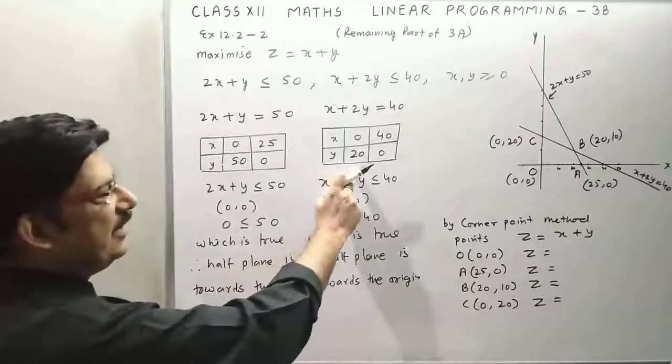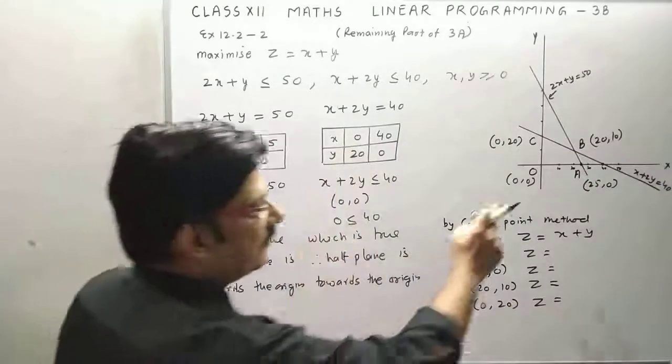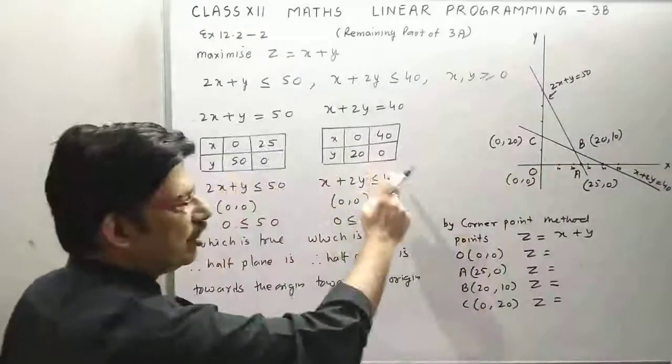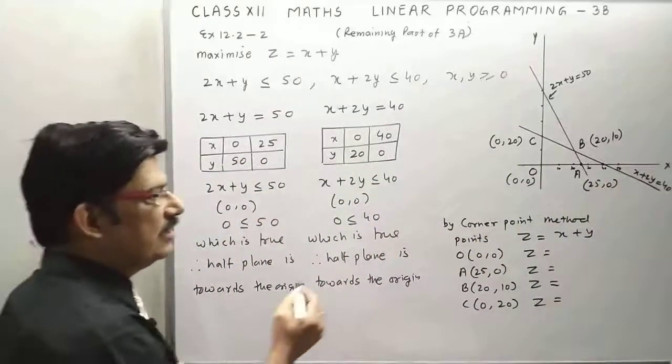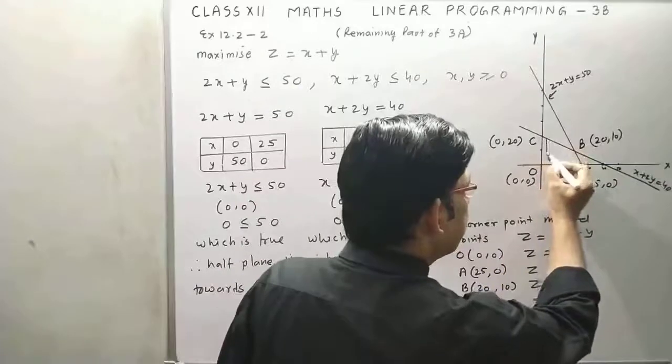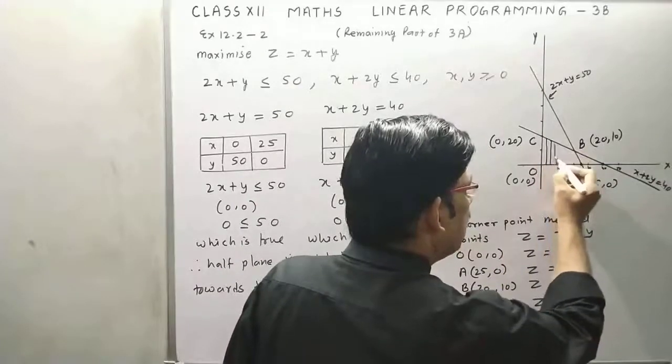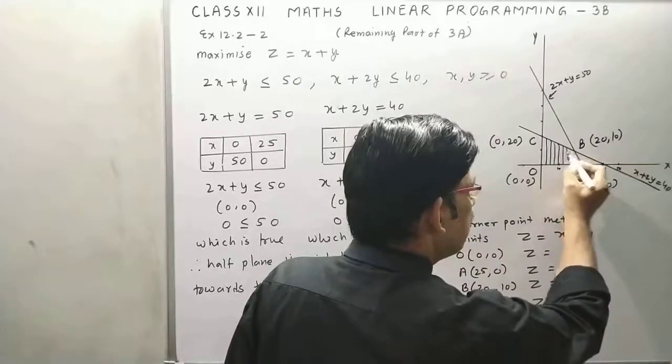Now for second we have 0 comma 20, this point, and 40 comma 0 is another point. Now draw this line and shade the common region. First of all, it will be towards the origin because the condition is true.